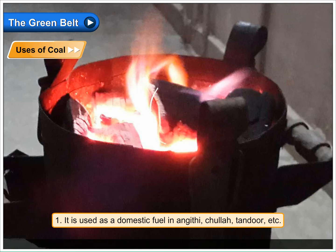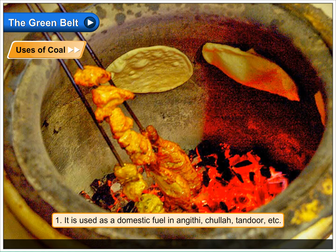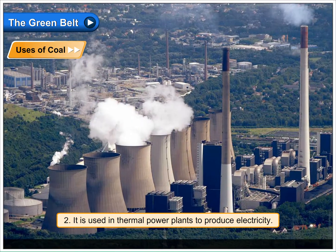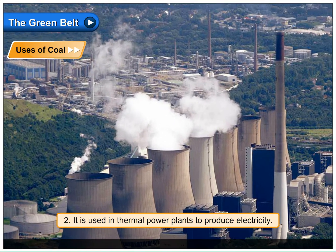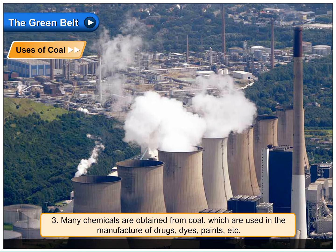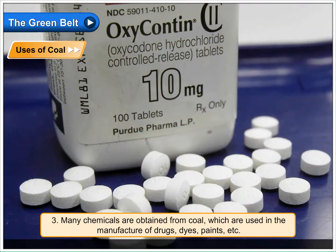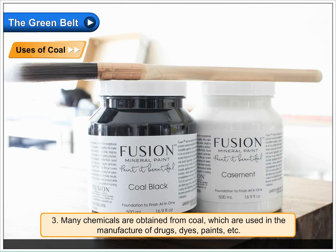Uses of coal: One, it is used as a domestic fuel in angiti, chula, tandoor, etc. Two, it is used in thermal power plants to produce electricity. Three, many chemicals are obtained from coal which are used in the manufacture of drugs, dyes, paints, etc.